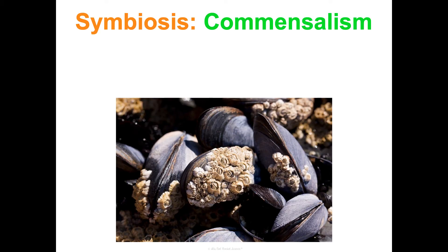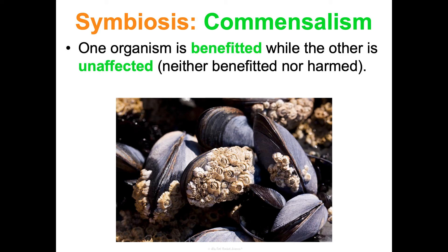Another type of symbiotic relationship is commensalism, where one organism is benefited while the other is completely unaffected — neither benefited nor harmed. One example is barnacles on mussels. The barnacles do nothing to the mussels, which are completely unaffected, but the barnacles are able to spread to different areas because they're attached to the mussels.